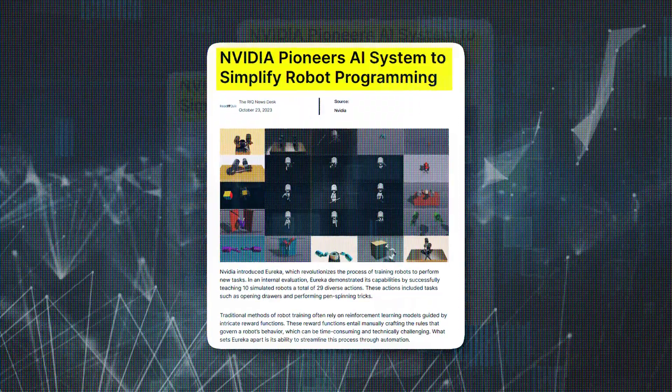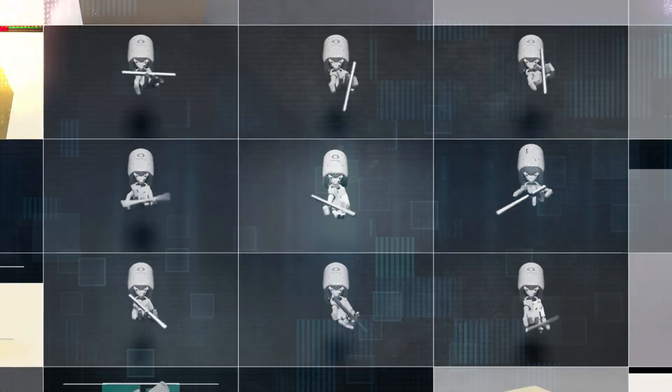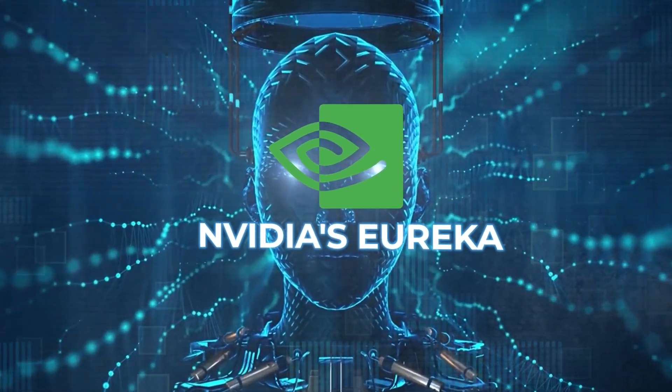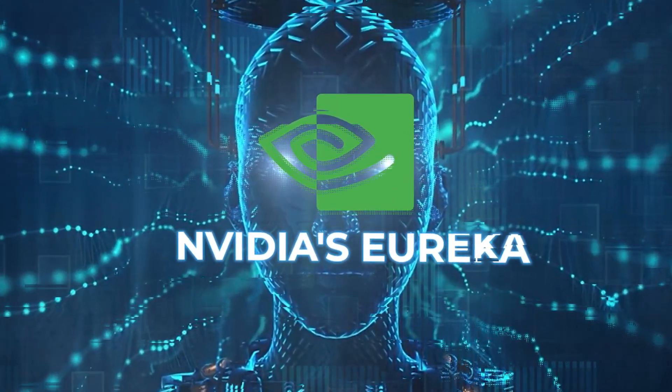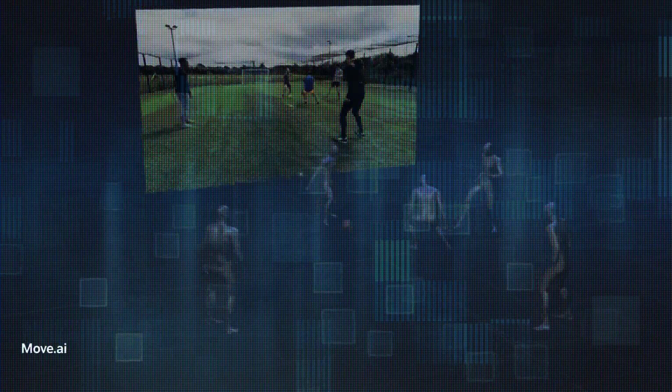This approach eliminates the need for explicit programming, allowing robots to learn by observing humans. Eureka can also adapt to new tasks and environments, making it a versatile tool for robot learning.